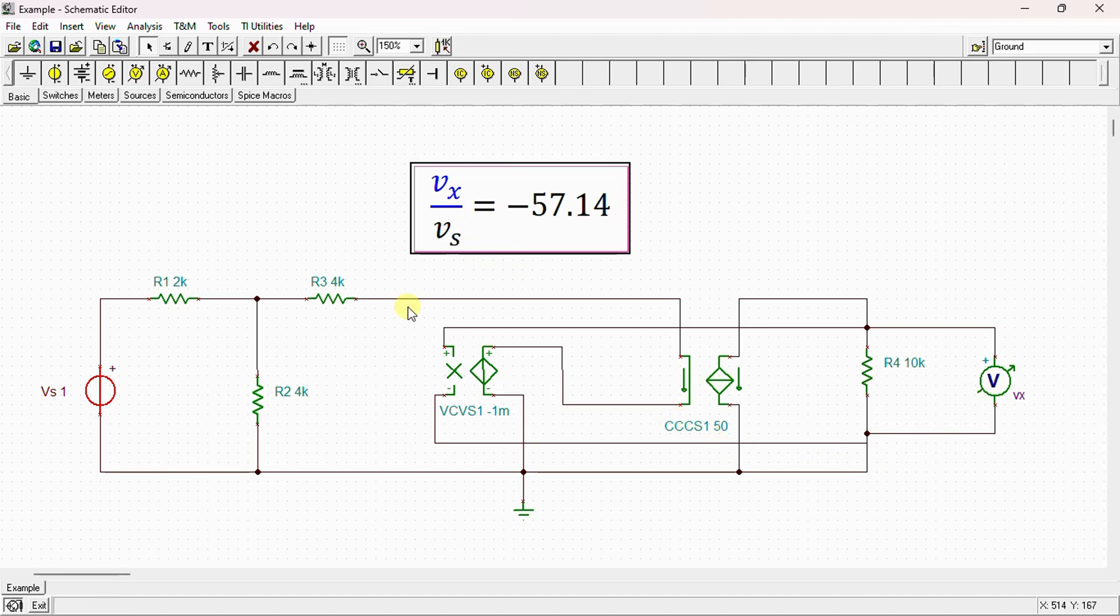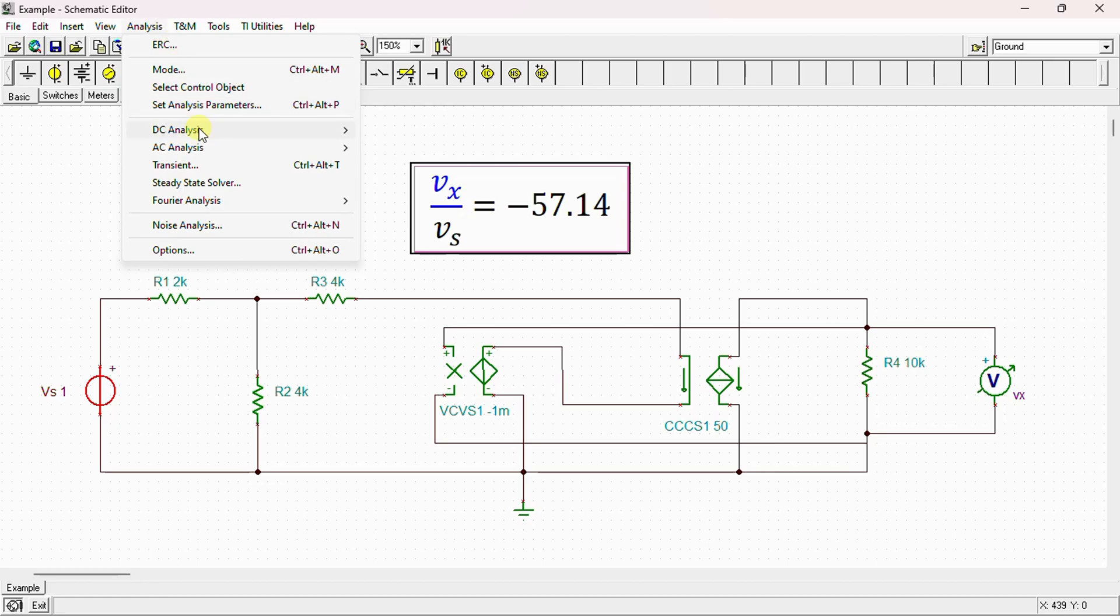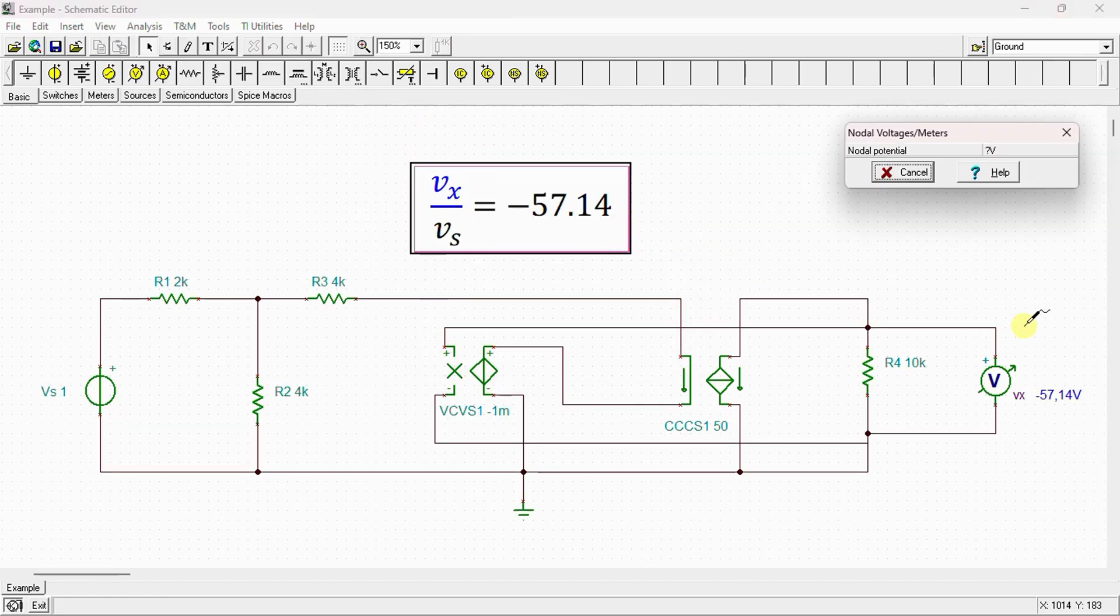In order to verify our result, let's consider for example Vs is equal to 1 volt. That means from here, from the gain that Vx is equal to Vs multiplying by negative 57.14. That means we need to obtain Vx is equal to negative 57.14. If we go to analysis, DC analysis, calculate nodal voltages, we can see here that Vx is equal to negative 57.14.